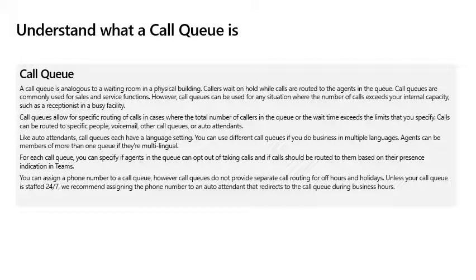Like auto attendants, call queues have a language setting, and you can use different call queues in multiple languages. Agents can be members of more than one queue if those agents are multilingual. You can also assign a phone number to a call queue. However, call queues do not provide separate call routing for off hours and holidays. Unless your call queue is staffed 24/7, we recommend assigning the phone number to an auto attendant that will redirect the call to a call queue during business hours.